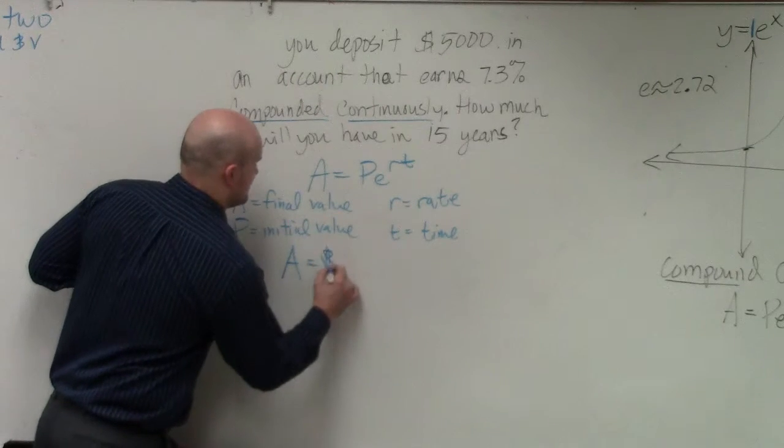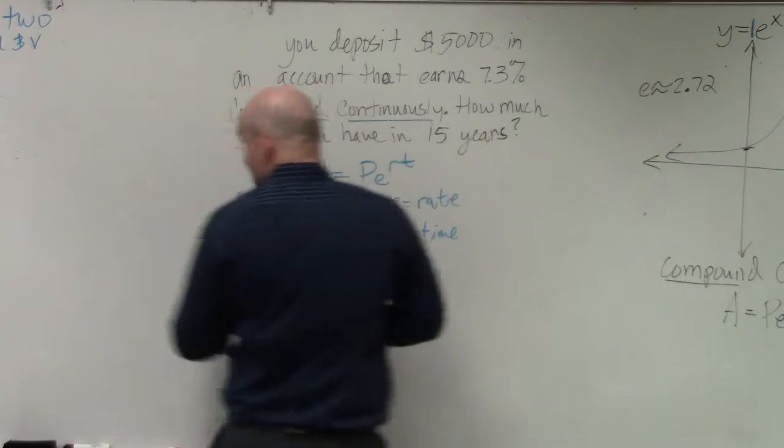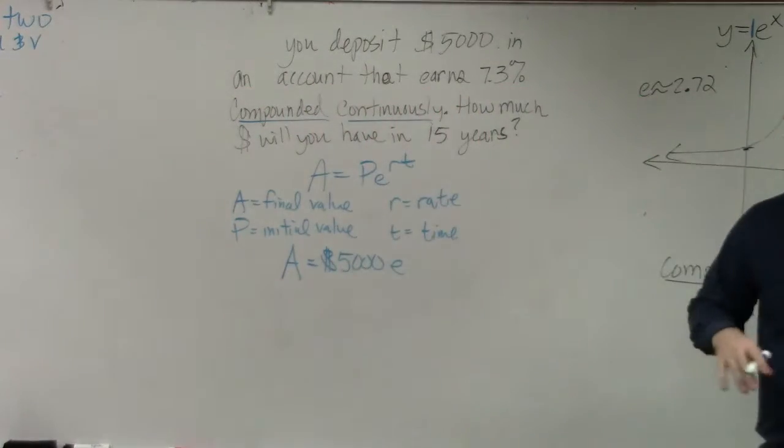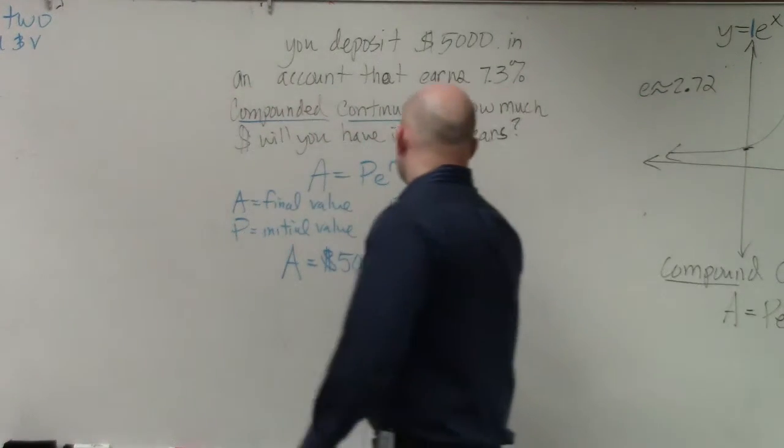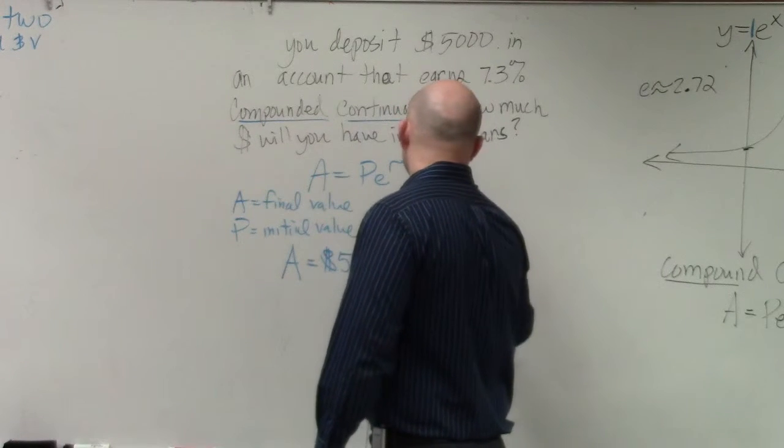Because they tell us what our initial value is. You deposit $5,000 times e raised to the rate. Please remember your rate is going to be in decimal format, so that's going to be 0.073, and then times t, which is 15.